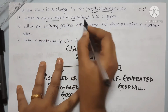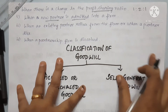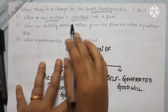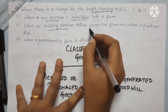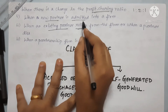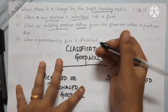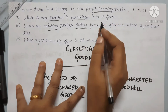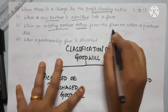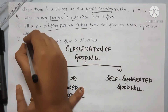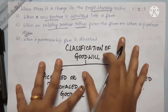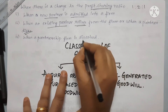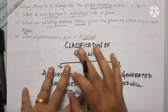The second circumstance is when new partners are admitted to the firm. The third is when a partner retires from the firm or when a partner dies. In all these situations, we need to carry out the valuation of goodwill. Also, when the firm is dissolved or closed.